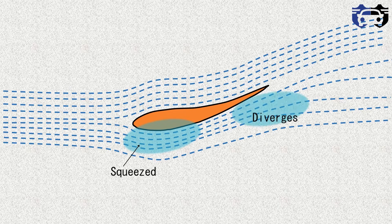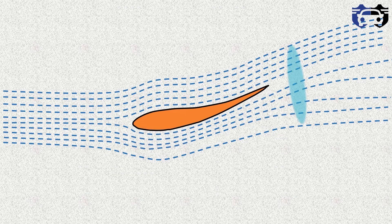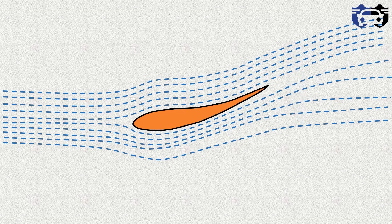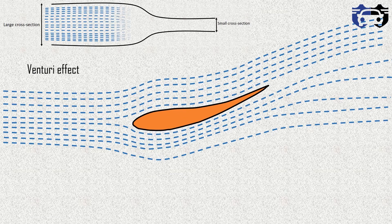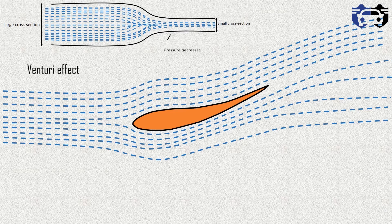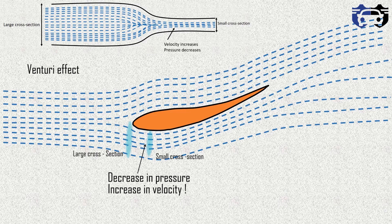What's happening at the squeezed part? Basically it's a Venturi effect. When the air moves from the large cross section area to the smaller cross section area, its velocity increases and the pressure decreases. This leads to the decrease in pressure here and the increase in velocity.